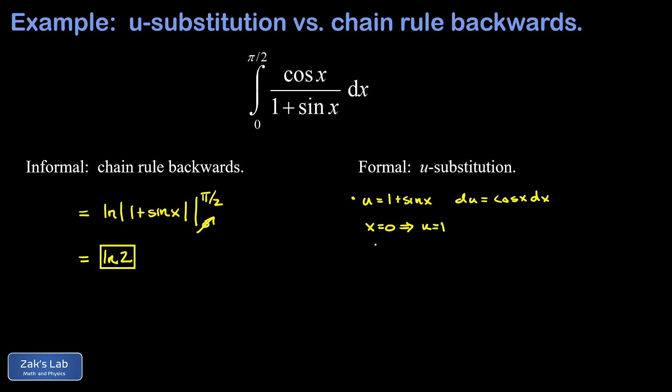So in u space, our integral is going to start at 1 instead of 0. When x is pi over 2, I plug in pi over 2 into my definition of u, and the sine of pi over 2 is 1. So I get u equals 2.